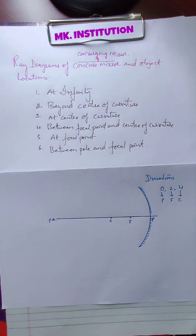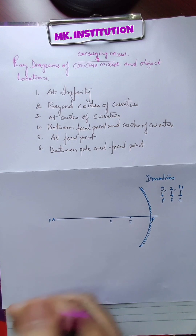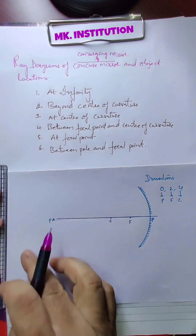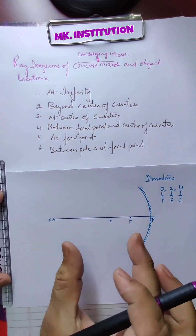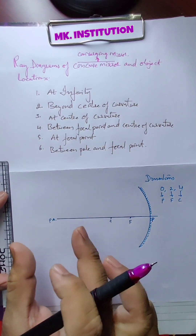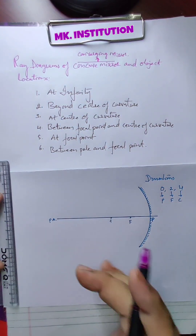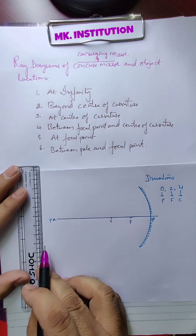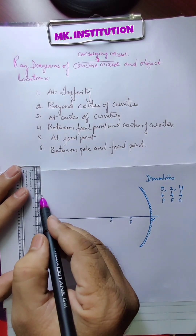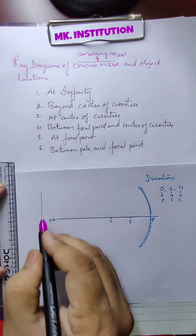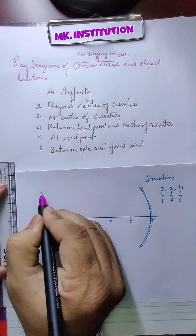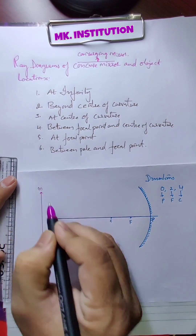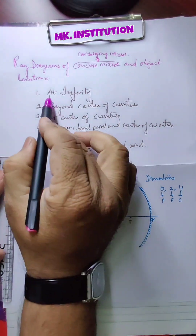Now check the first object location: at infinity. At infinity indicates somewhere here — a particular distance has not been given. Somewhere here you can draw and keep the object. This is the first one: at infinity.